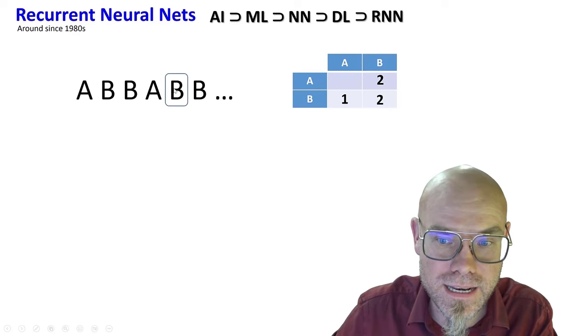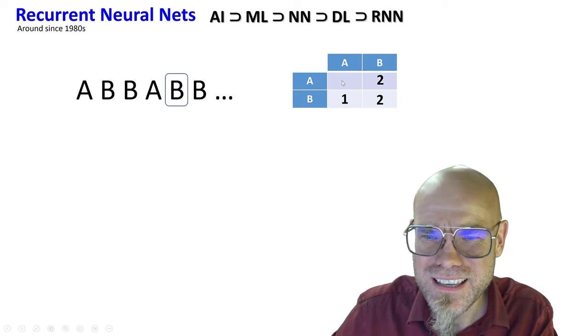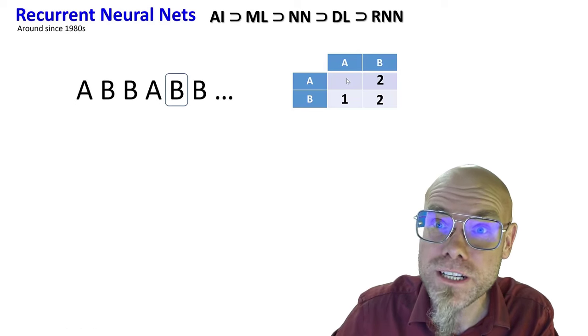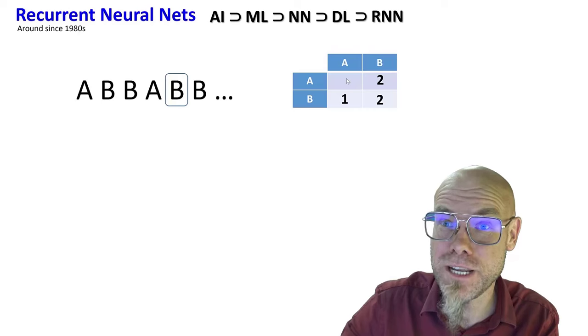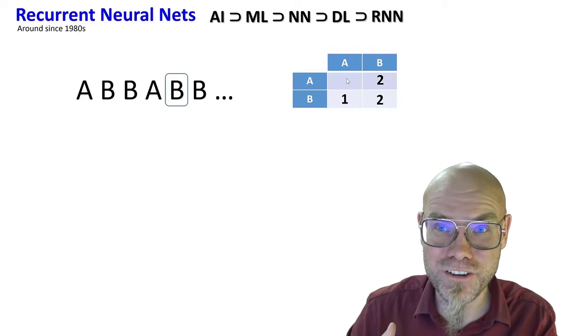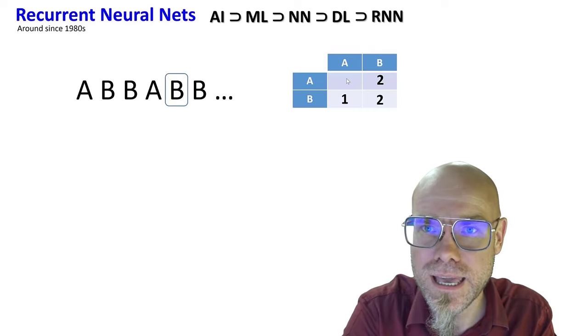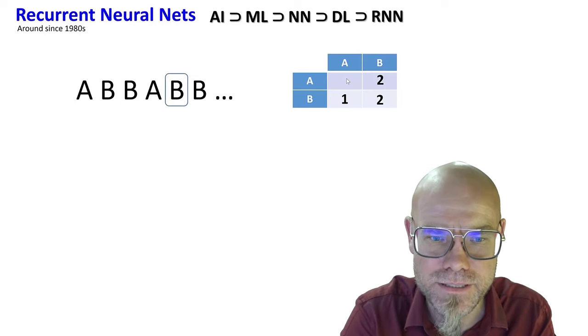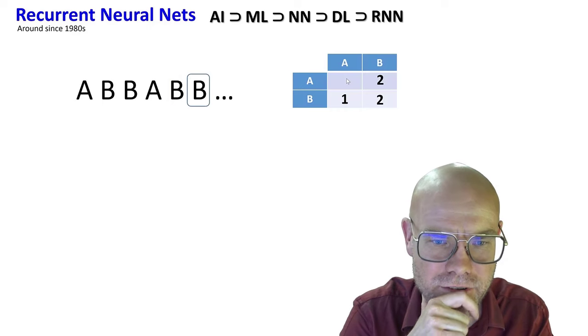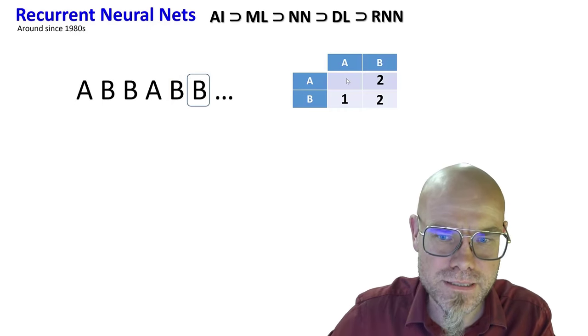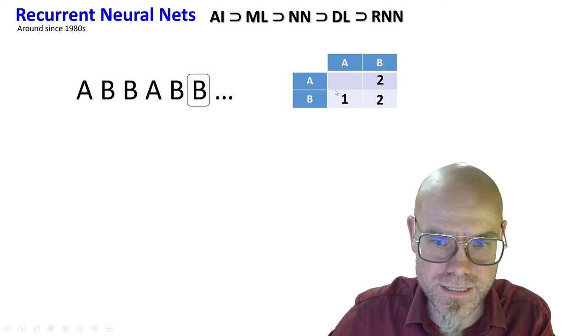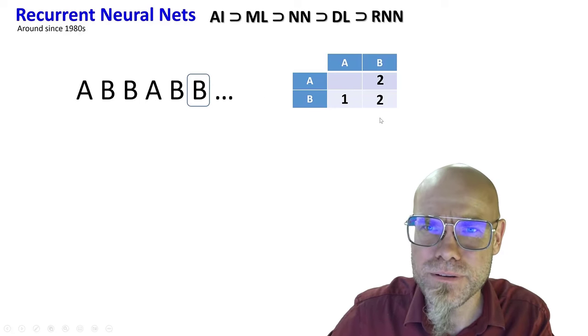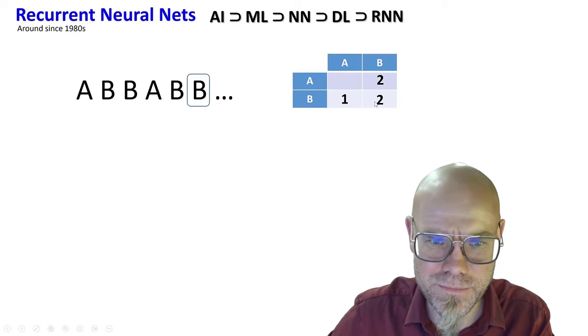After that B comes another B. A double A does not happen, we can already fine tune our prediction. I predict that AA doesn't happen, it's just very unlikely, like zero probability. What happens next? After B there could be an A or there could be another B.